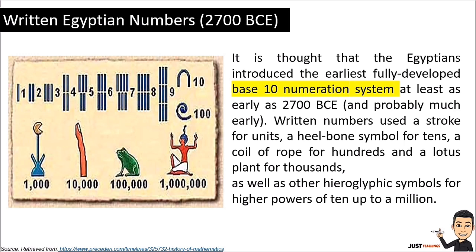Proceeding now to written Egyptian numbers: from 2700 BCE, it is thought that the Egyptians introduced the earliest fully developed base-10 numeration system, at least as early as 2700 BCE and probably much earlier. Little numbers used a stroke for units, a hill-bone symbol for tens, a coil of rope for hundreds, and a lotus plant for thousands, as well as other hieroglyphic symbols for higher powers of 10, up to a million.